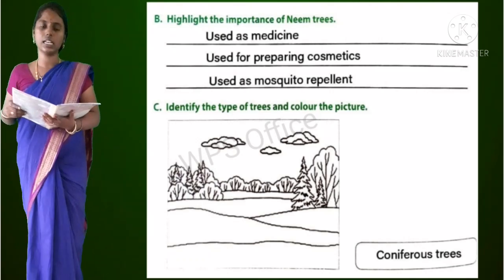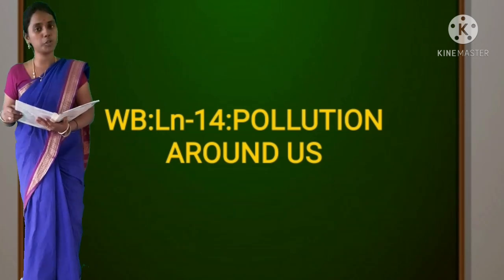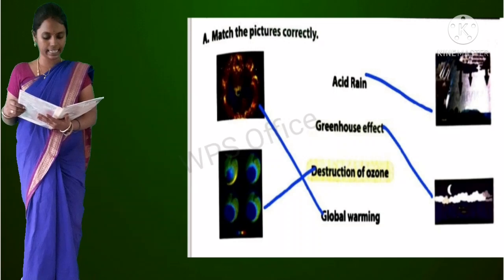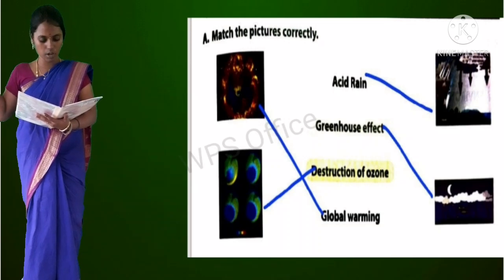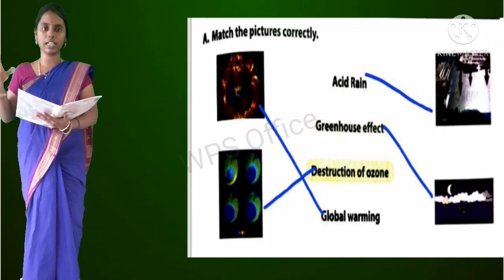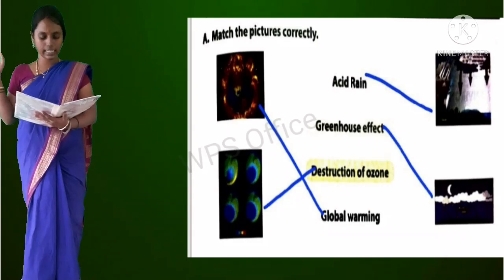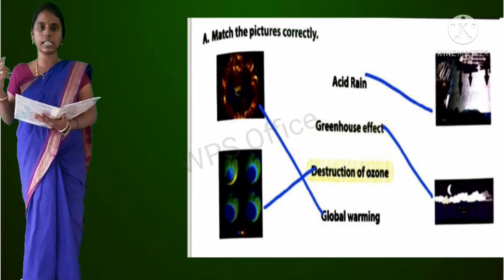Now we will revise workbook lesson number 14: Pollution Around Us. Worksheet 1, Section A: Match the pictures correctly. The event words are acid rain, greenhouse effect, destruction of ozone, and global warming. First picture is global warming, second is destruction of ozone. On the right side, first picture is acid rain and the second one is greenhouse effect.